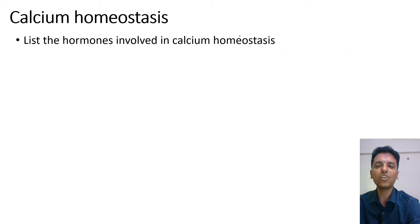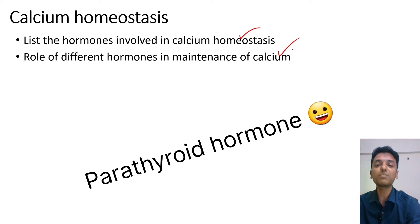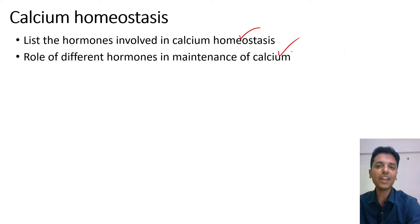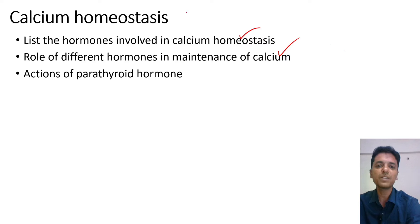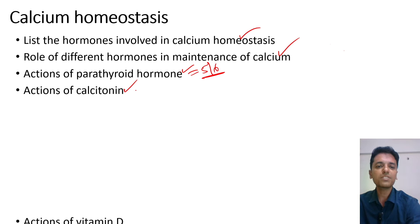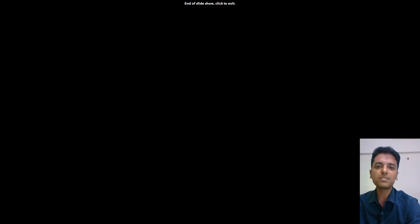Don't forget calcium homeostasis. Three important hormones are involved: parathyroid hormone, calcitonin, and vitamin D. You should know each hormone's role in maintaining serum calcium — which hormone increases it, which decreases it, and where they act. Separately, the actions of parathyroid hormone can be a five or six marker. Calcitonin and vitamin D actions can also be asked separately. Hypocalcemic tetany — occurring in conditions like hypoparathyroidism — is very important, with clinical signs including carpopedal spasm.